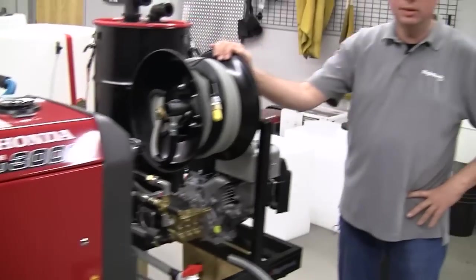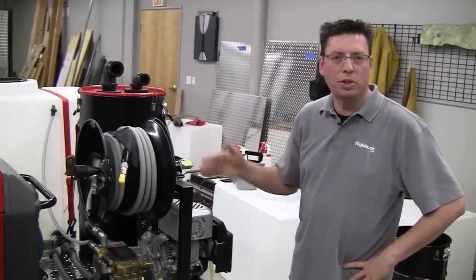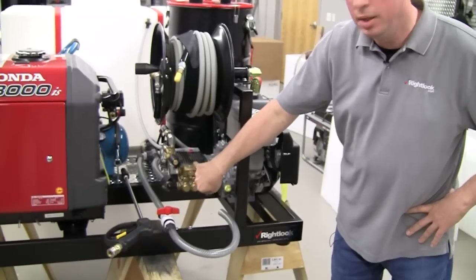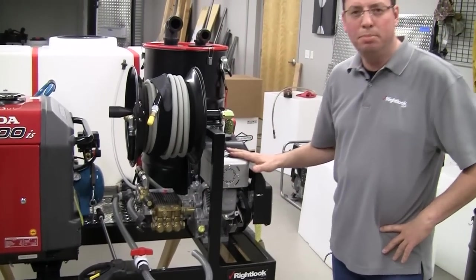The heart of the skid mount unit is this pressure washer system that we also manufacture here. It has a high-performance cam-driven pump. It's rated at 2,000 PSI.